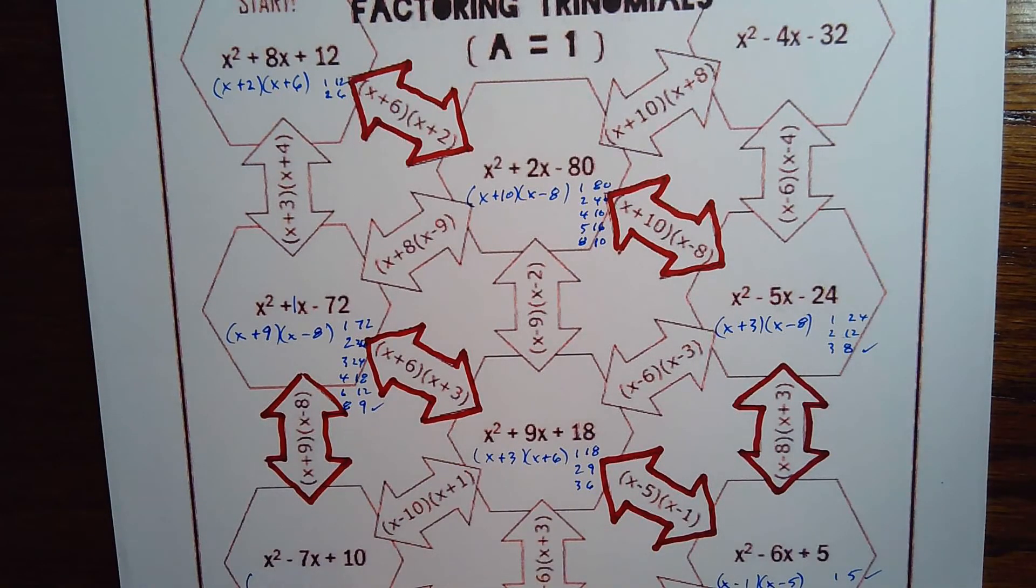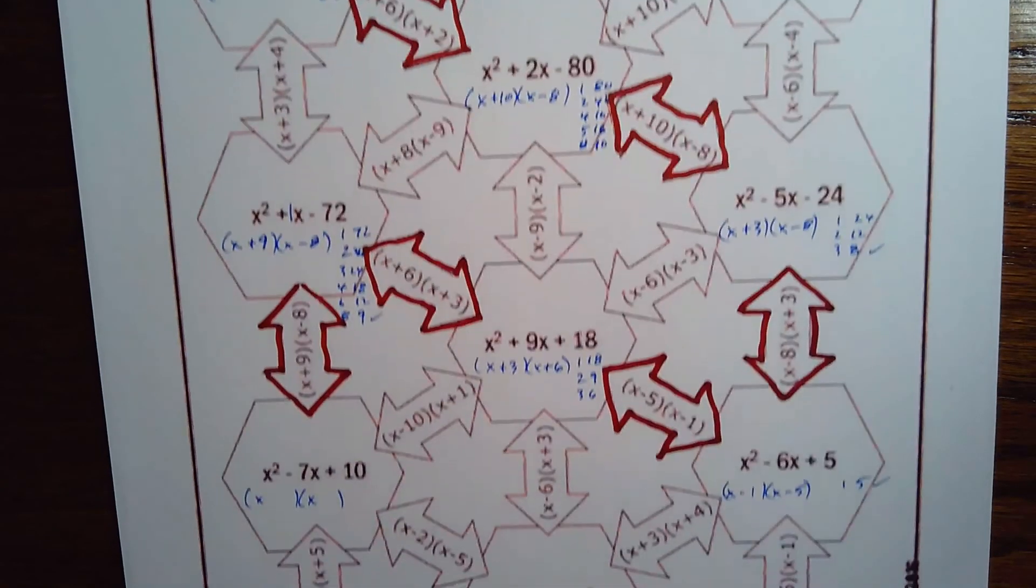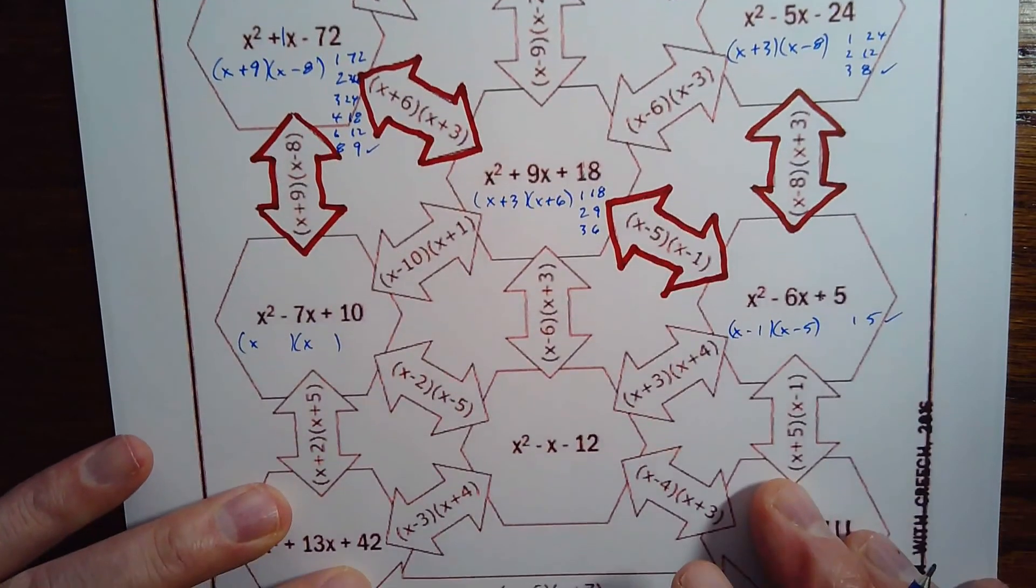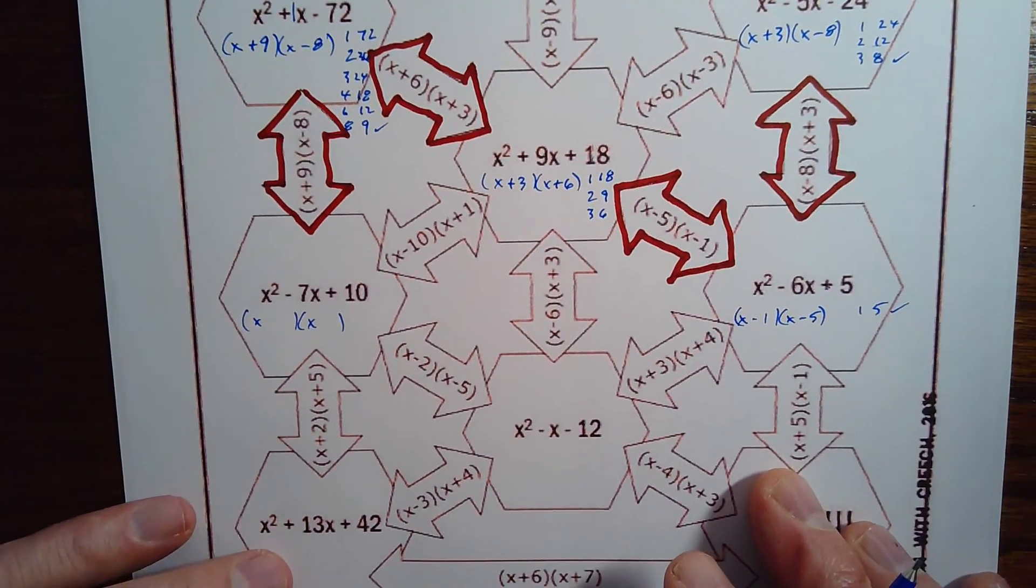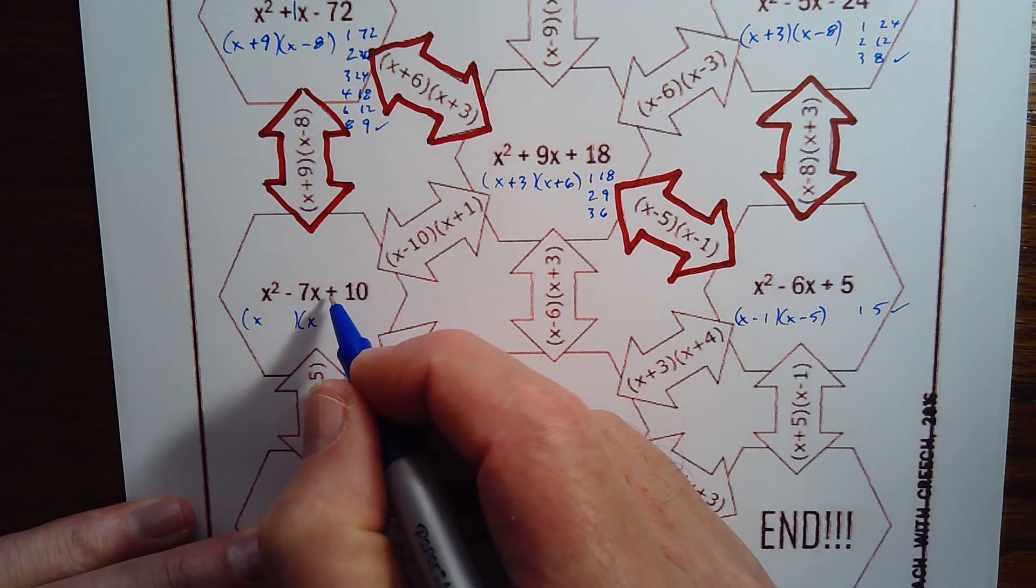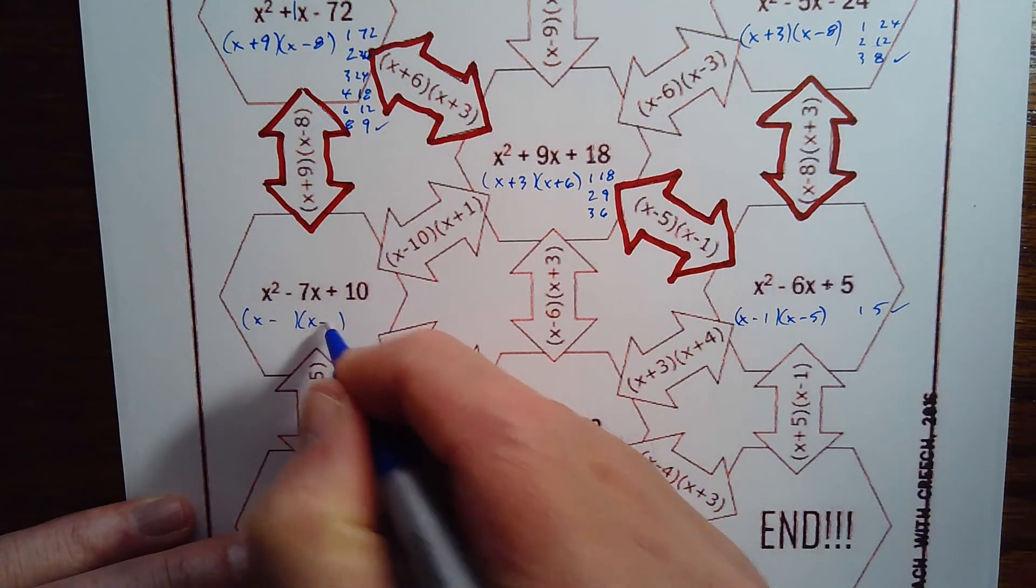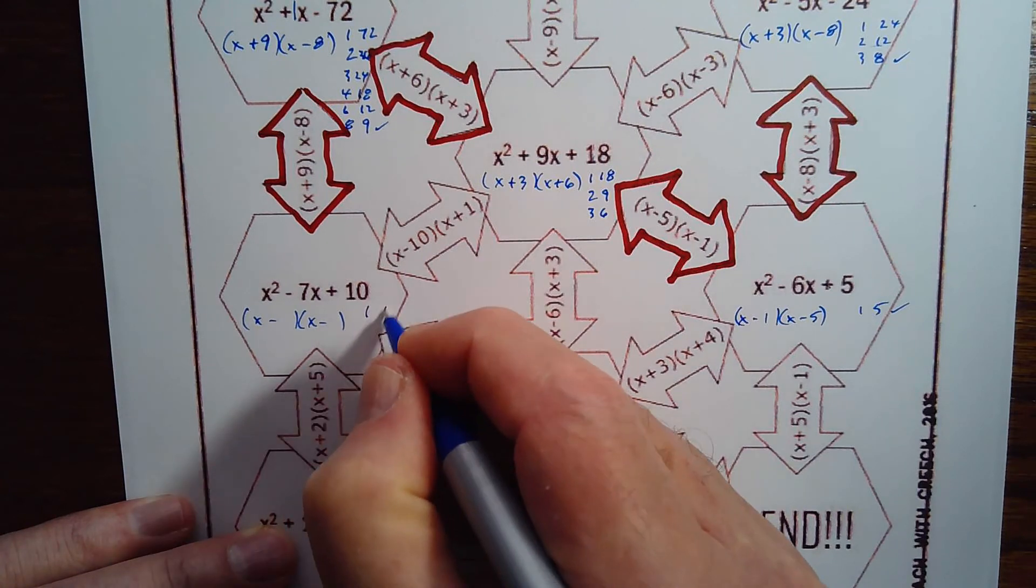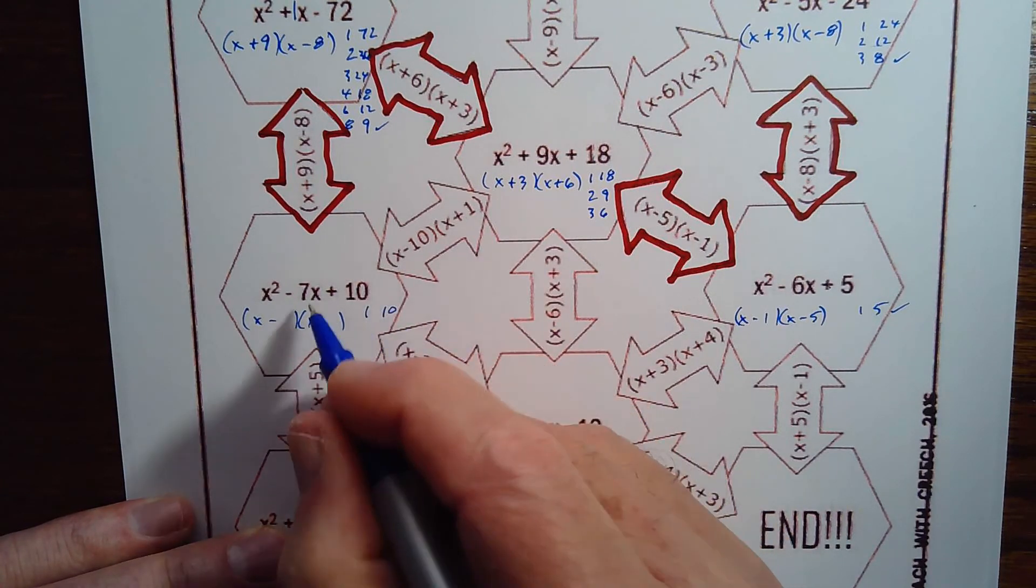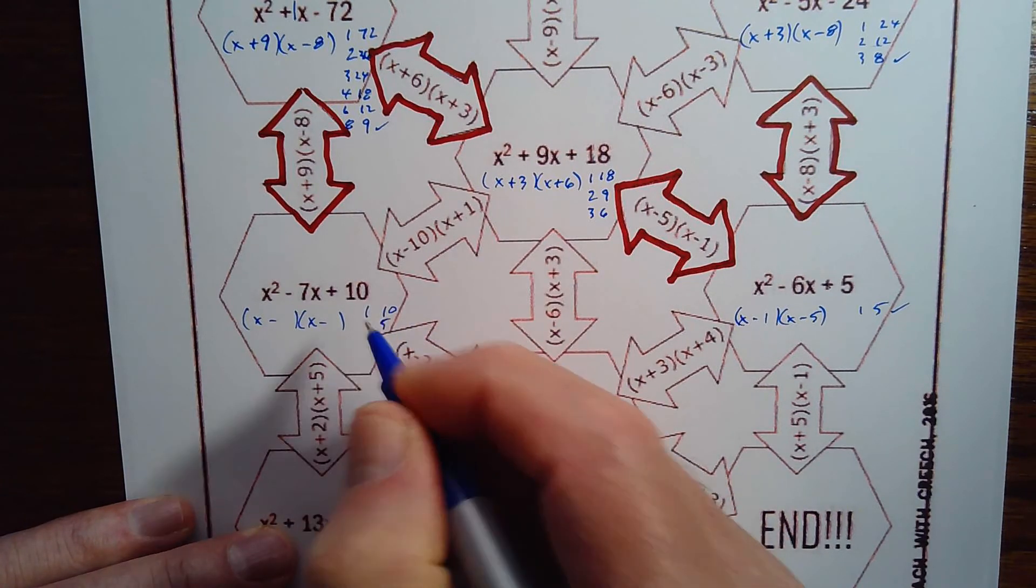Alright, this one. x and x. Positive sign here, whoops, I'm going to move that up for you. Sorry. Positive sign there tells me they're both the same. Negative sign for the middle term tells me they're both negative. And now 1 and 10, that's not going to add up to be 7. 2 and 5 though, winner winner. Alright, and that looks like we're heading diagonally.